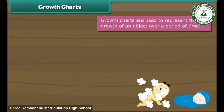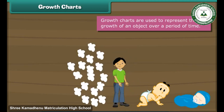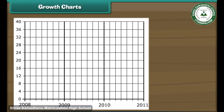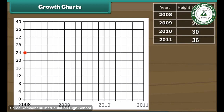Growth charts are used to represent the growth of an object over a period of time. Let us now trace the growth of Ravi over the past three years. We represent height vertically and years horizontally. In 2008, Ravi was 24 inches tall. The next year, he was 28 inches tall. In 2010, he grew to 30 inches. In 2011, he measured 36 inches. The growth chart of Ravi is ready.